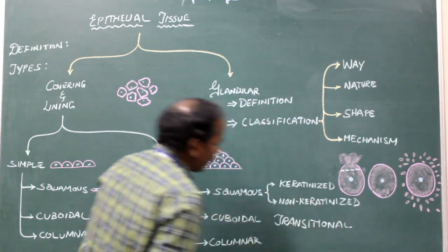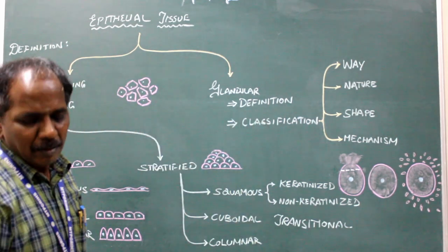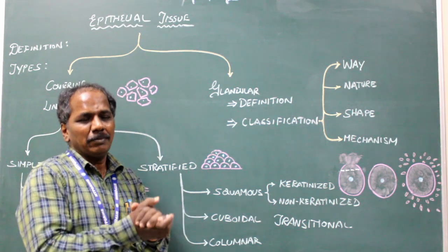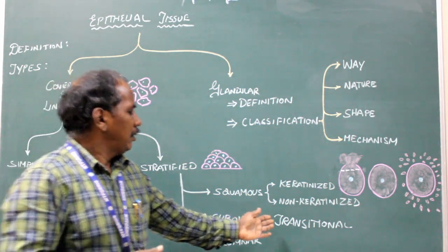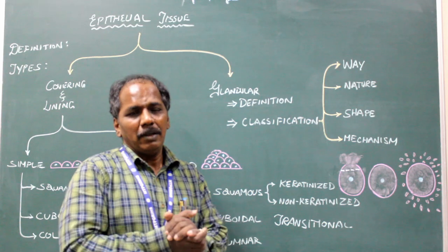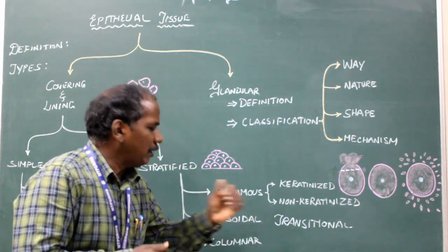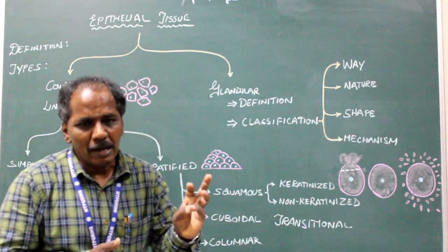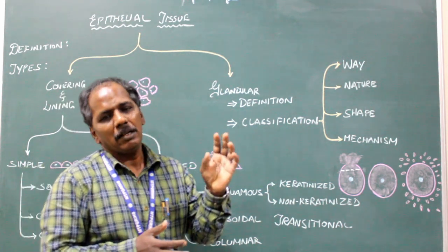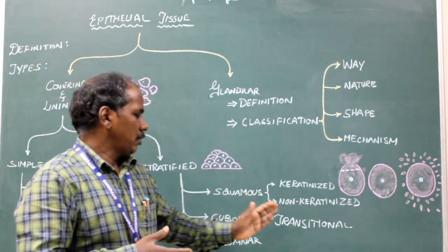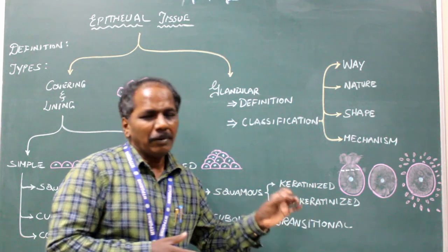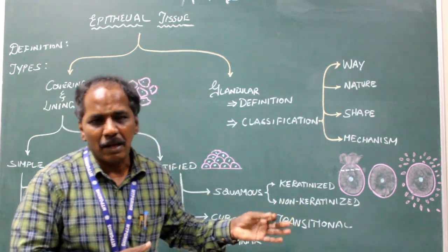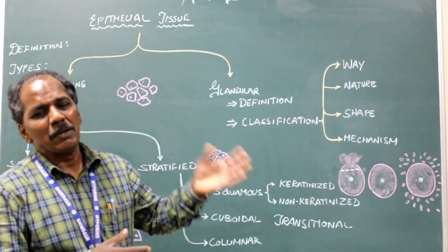Transitional epithelium — transitional means altering its shape, so it changes shape over time. It is present in the urinary bladder, ureter, and urethra — mainly in the urinary system. Transitional epithelium is otherwise known as urothelium.